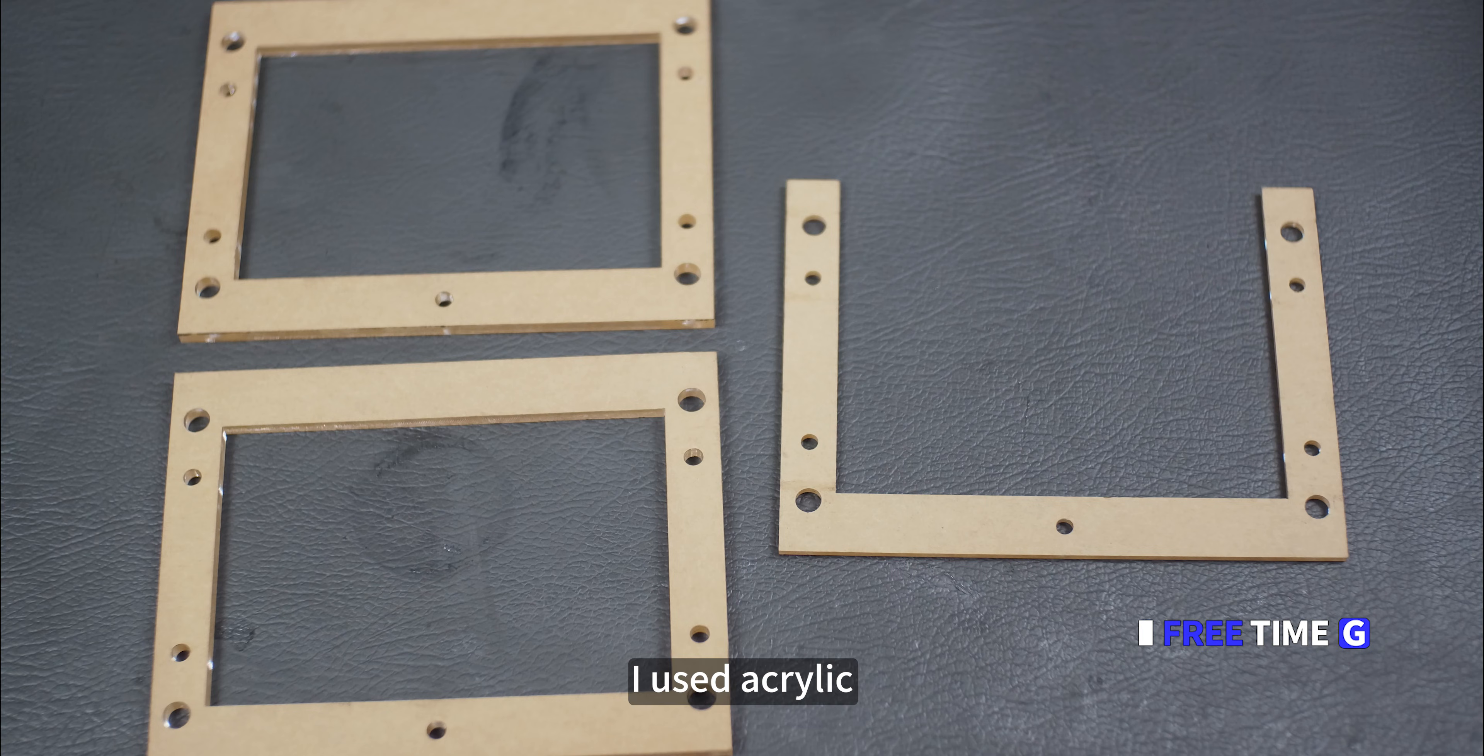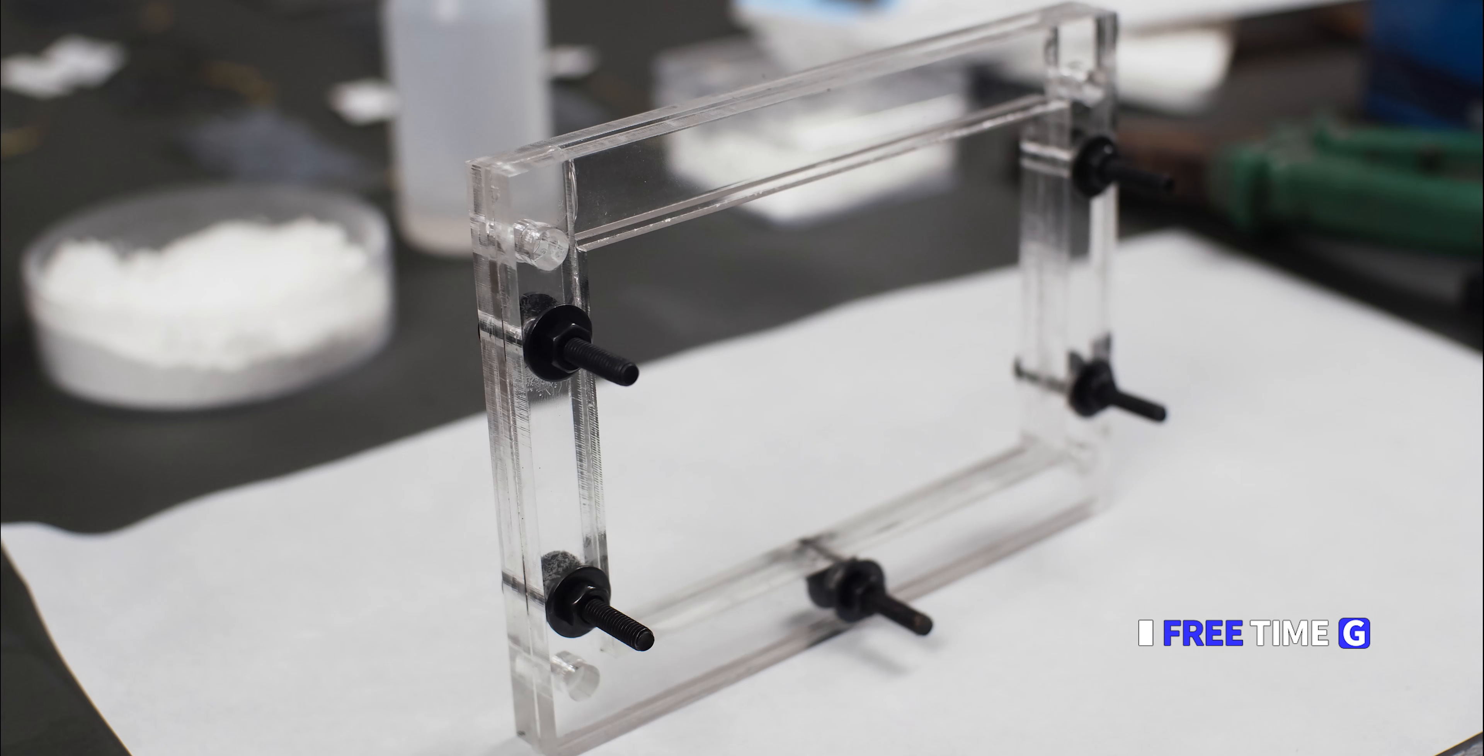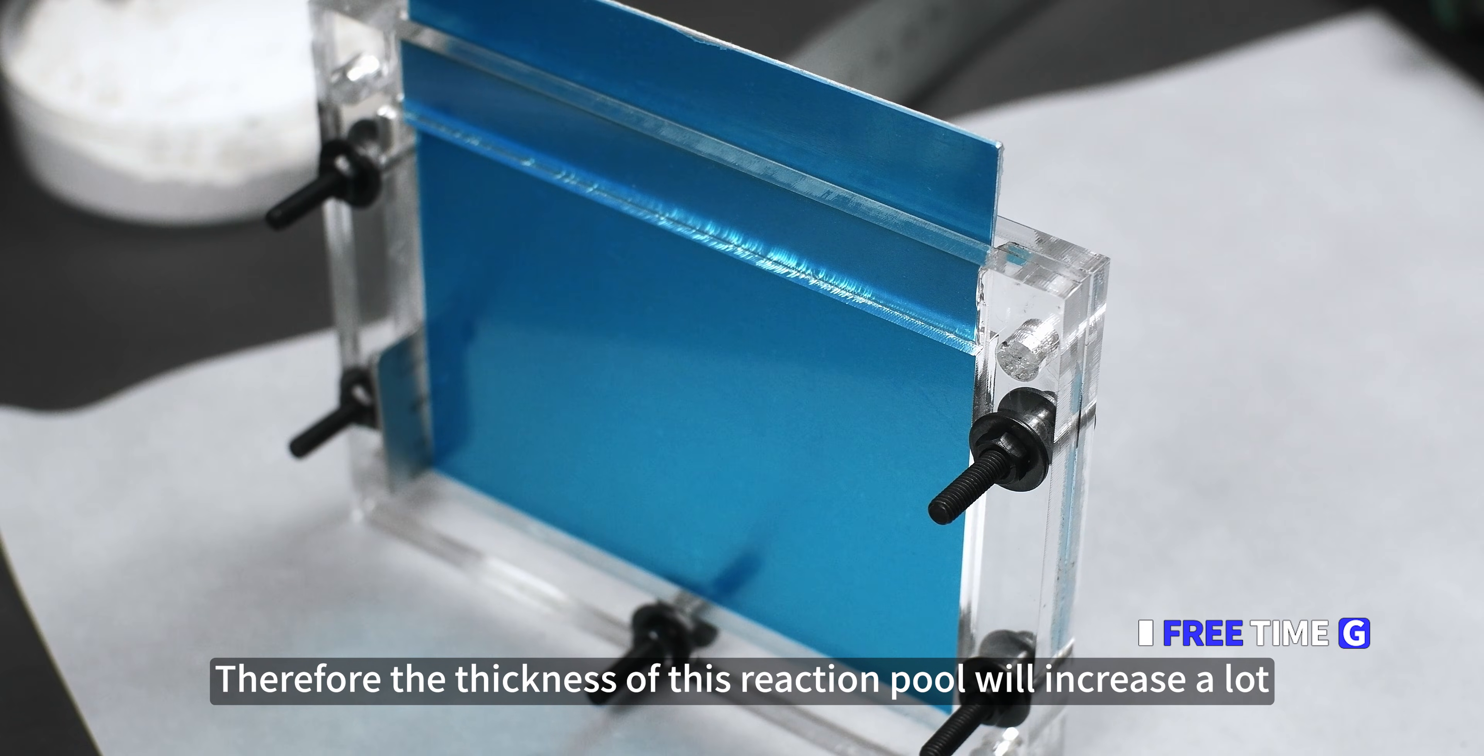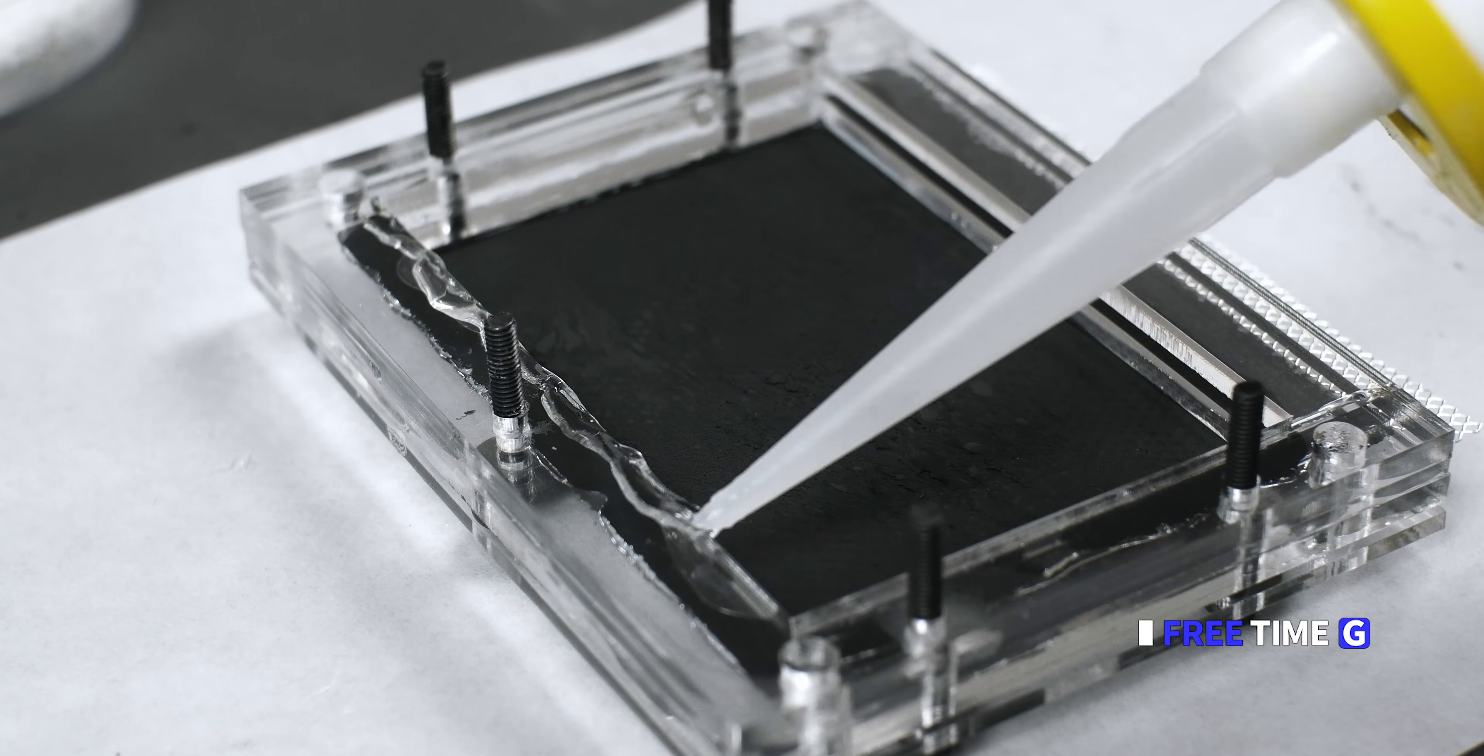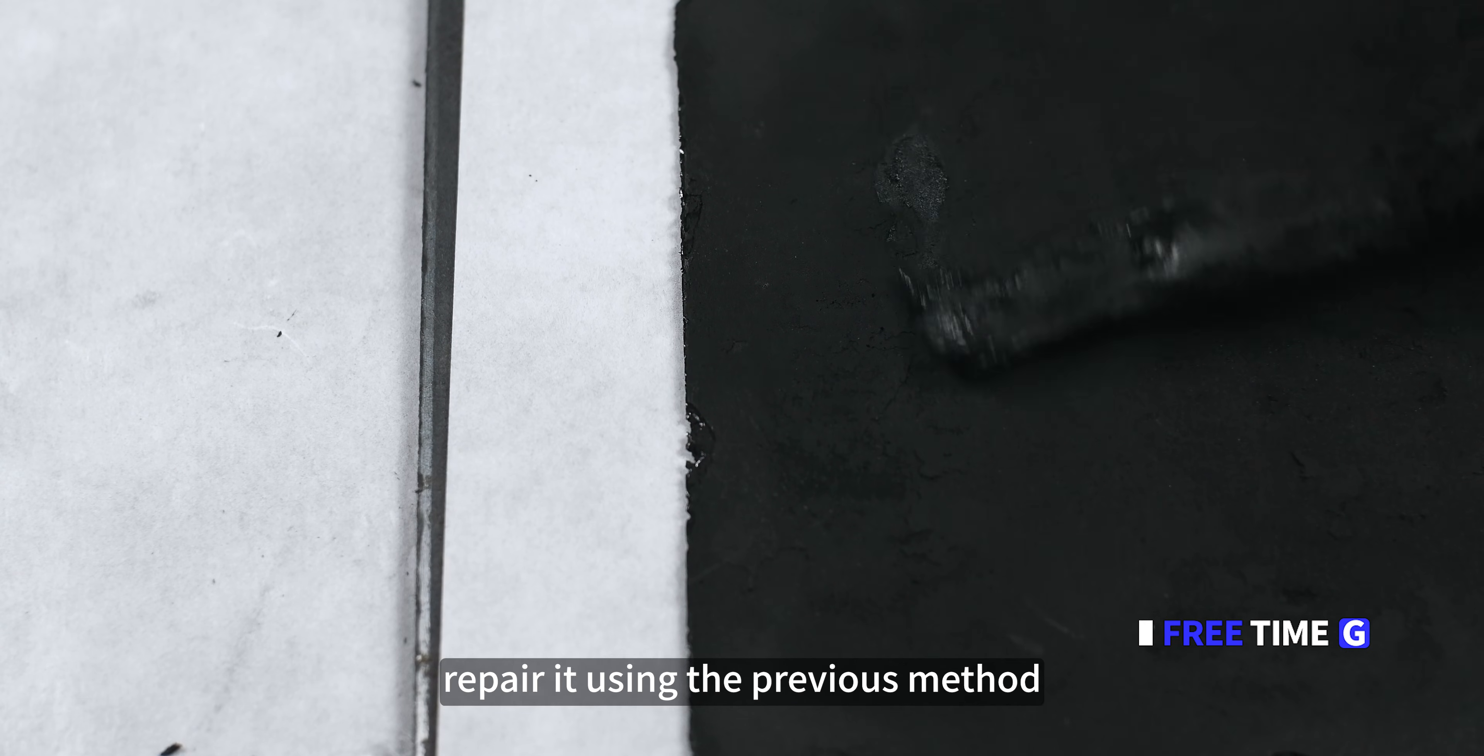Next is the production of the reaction pool. I used acrylic. Silicone rubber for sealants. For circuit boards, epoxy glue is not recommended. Very strong smell. It will corrode metal parts. Because I didn't plan to use the electrolyte circulation system this time, so leave a certain thickness of space to hold the electrolyte. Therefore, the thickness of this reaction pool will increase a lot. Apply sealant, seal carbon pool. Double carbon pool structure. It will solidify in three hours. Testing for water leaks. Generally, if there is no water seepage for an hour, there will be no leakage. If there is a leak, repair it using the previous method. It's no big deal.